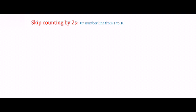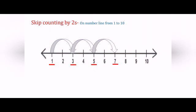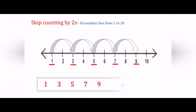As I said, we can start skip counting at any number. In the first example we saw skip counting by 2s on a number line starting from 0 to 10. Now let's start skip counting by 2s on a number line starting from 1 to 10. Starting from 1, we skip a number which is 2 and jump to 3. Accordingly it will reach numbers 5, 7, 9. We have skipped numbers 2, 4, 6 and 8. So this is skip counting by 2s.